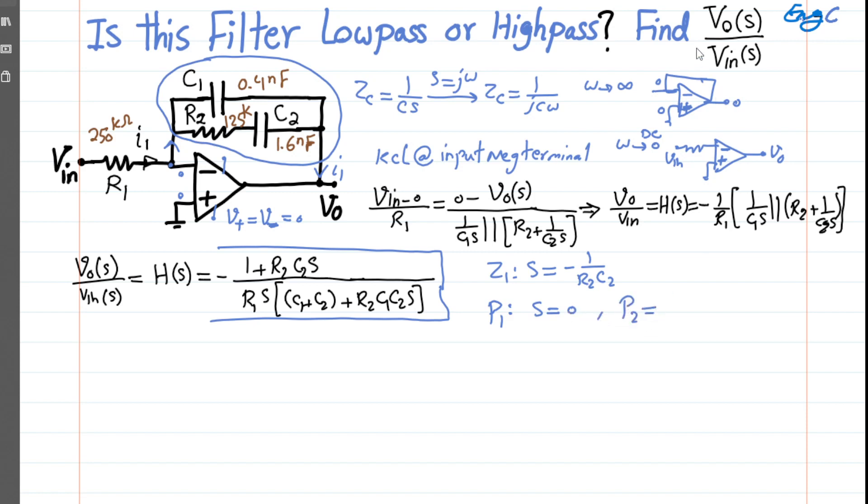And for the second pole, as you can see, we have to set the C1 plus C2 plus R2·C1·C2·S equal to zero. So we get S for the second pole is equal to -(C1 + C2) / (R2·C1·C2).